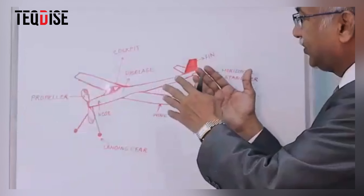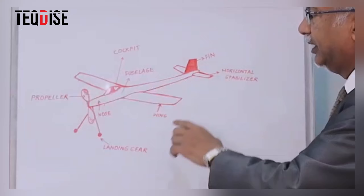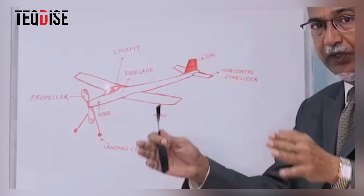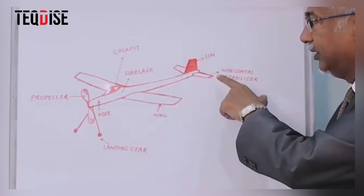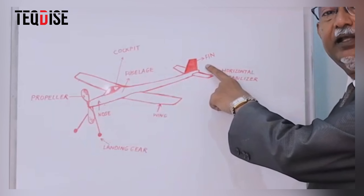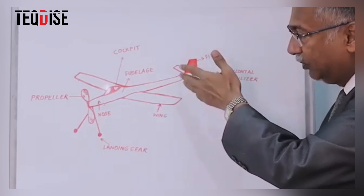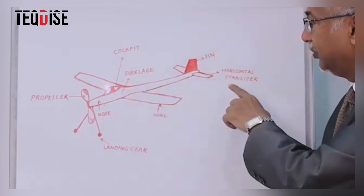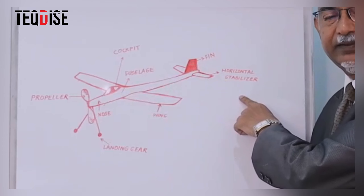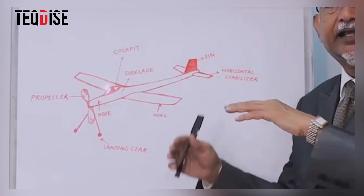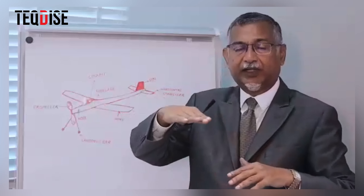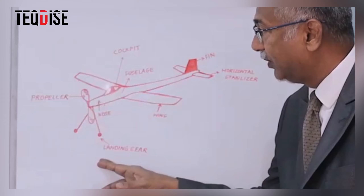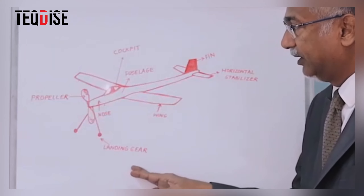On the back side of the plane you have the vertical piece shown in red — this is called the fin. Below the fin, parallel to the ground, you have the horizontal stabilizer. An aircraft takes off and lands on wheels, and those wheels are referred to as the landing gear.